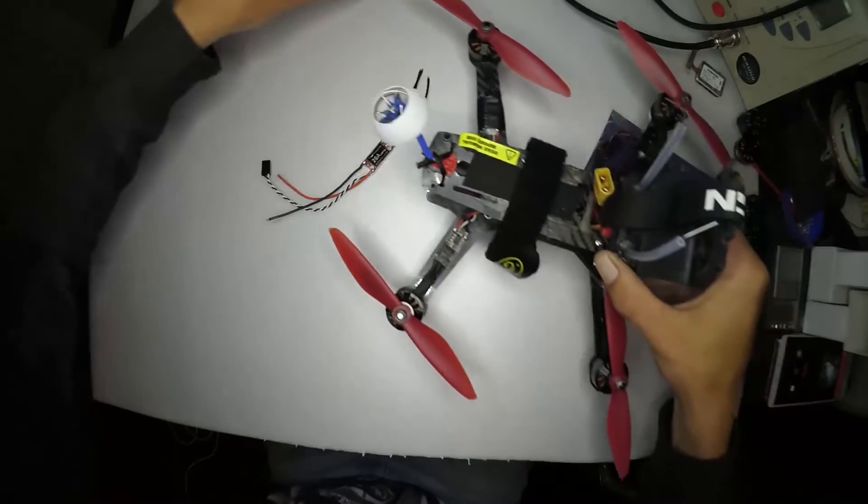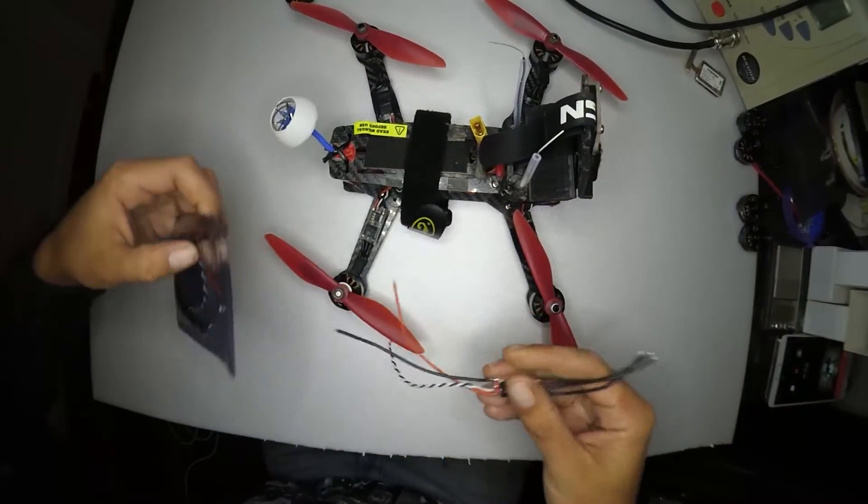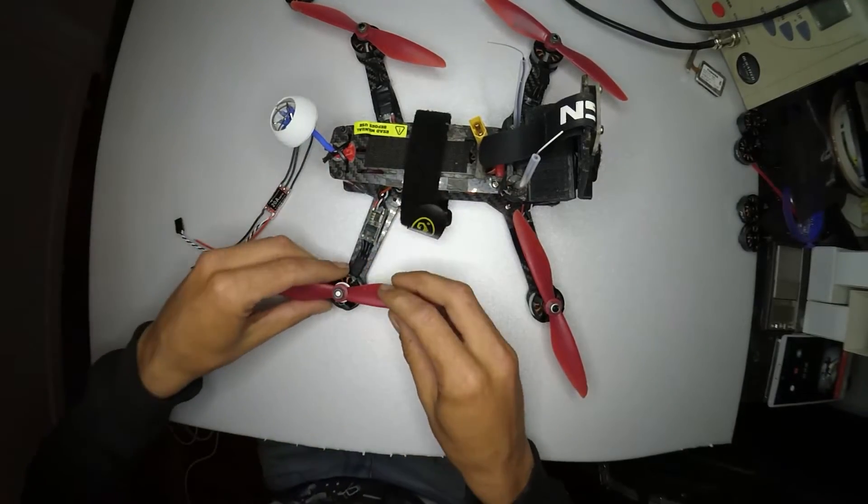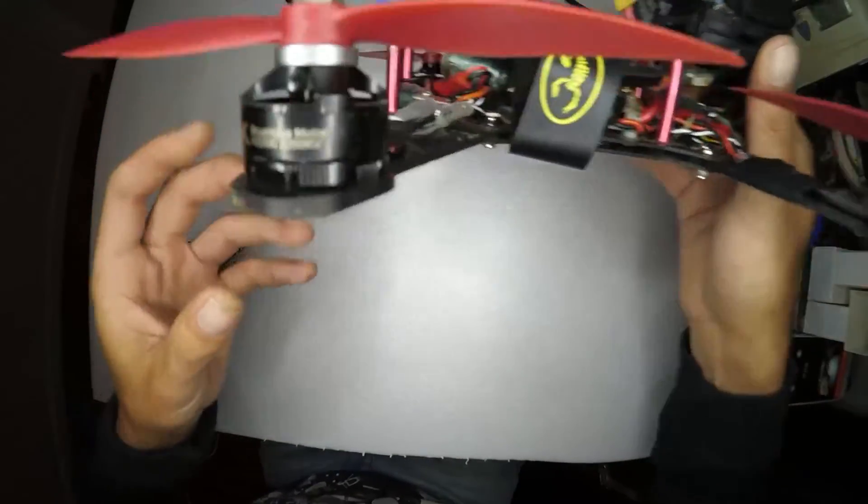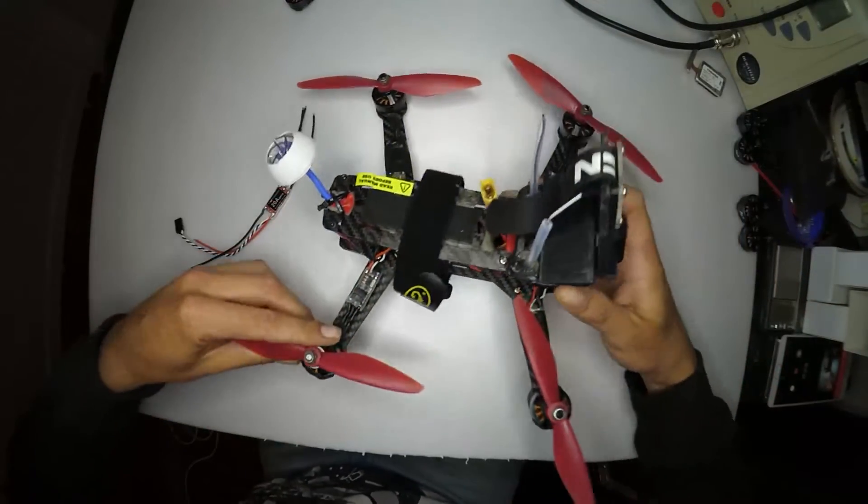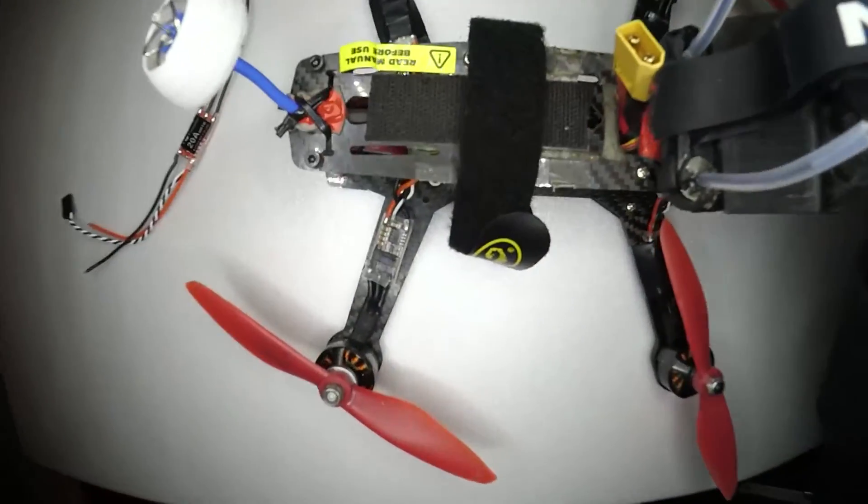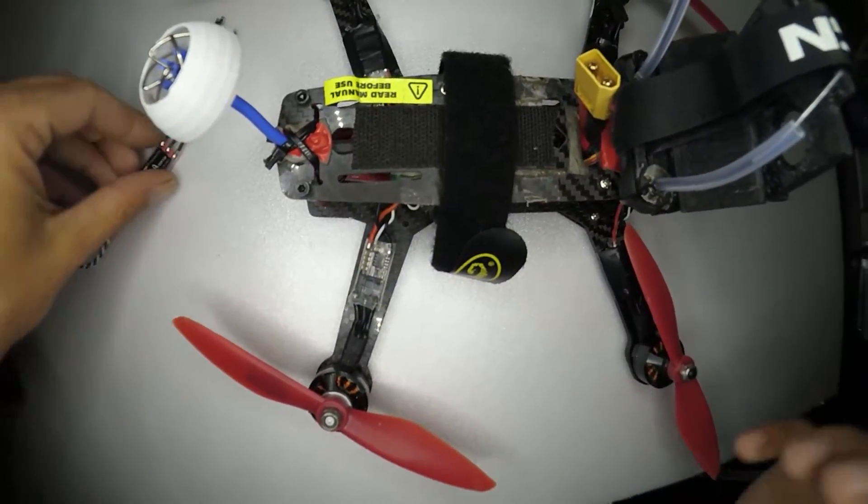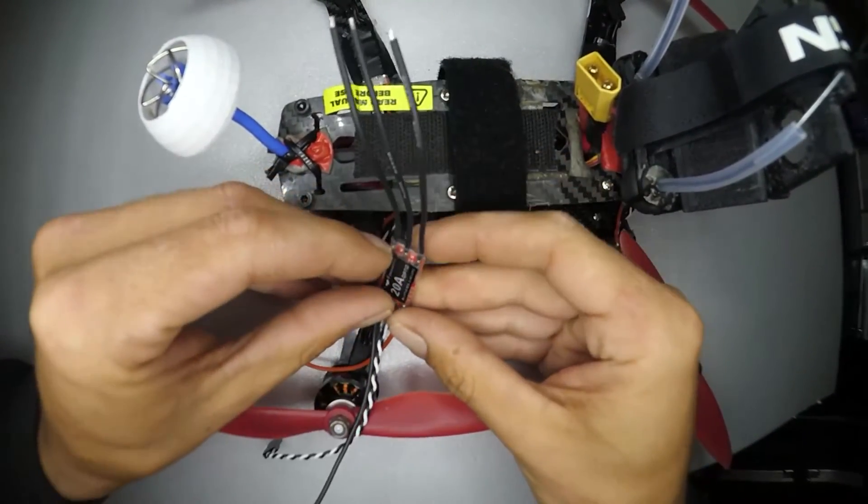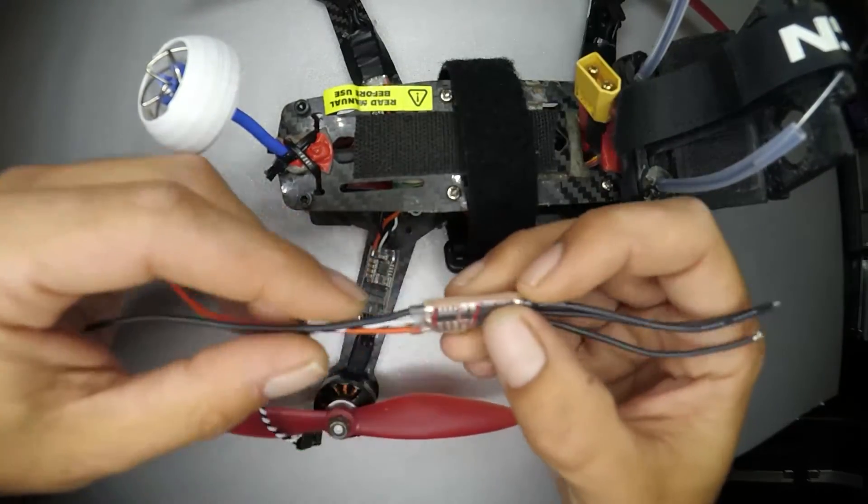And under the table here is one of my workhorse quads, an everyday flyer. It's currently loaded up with RCX H2206 motors with the Little Bees that come with the My RC Mart Combo. So, rip the sticker off here and we'll just do a little comparison for you guys.